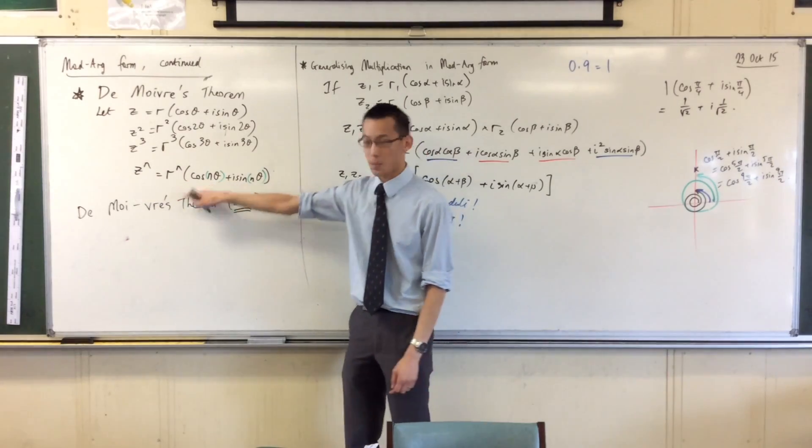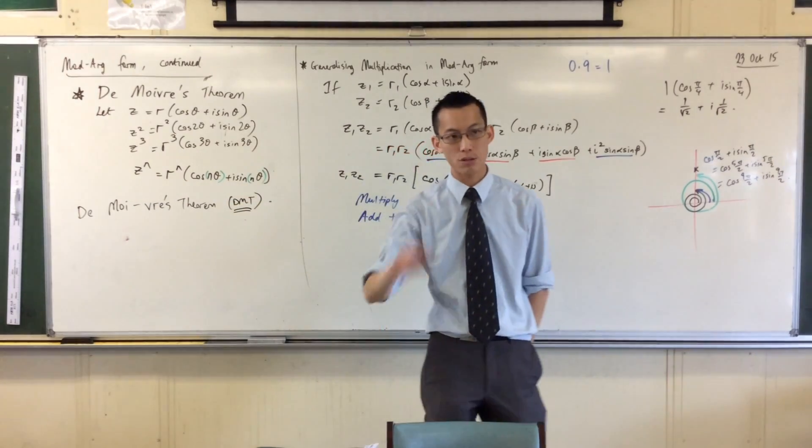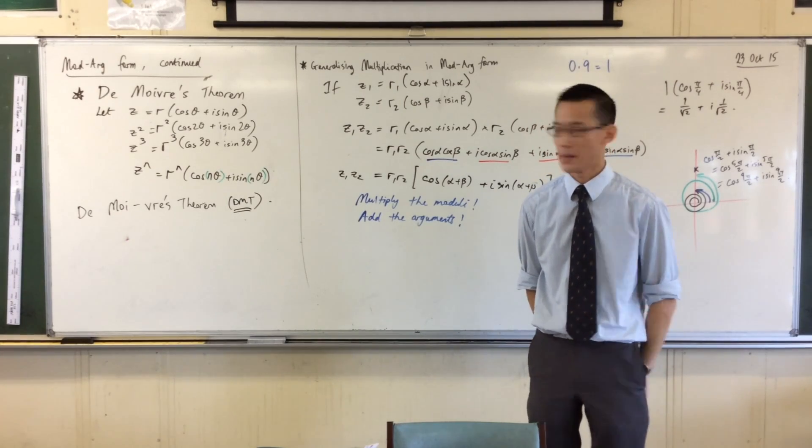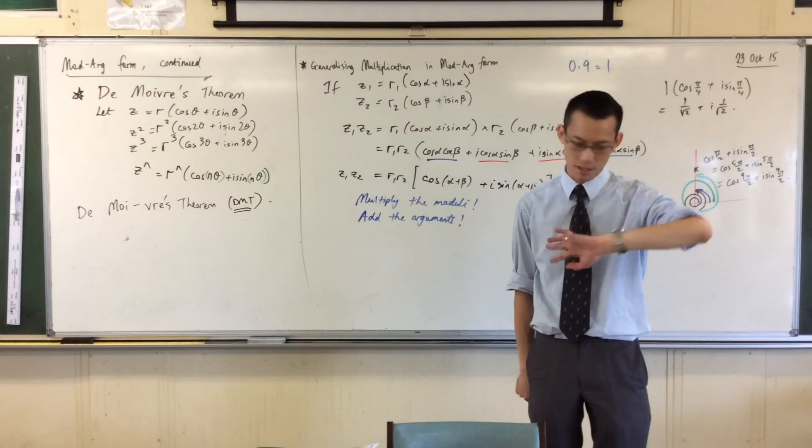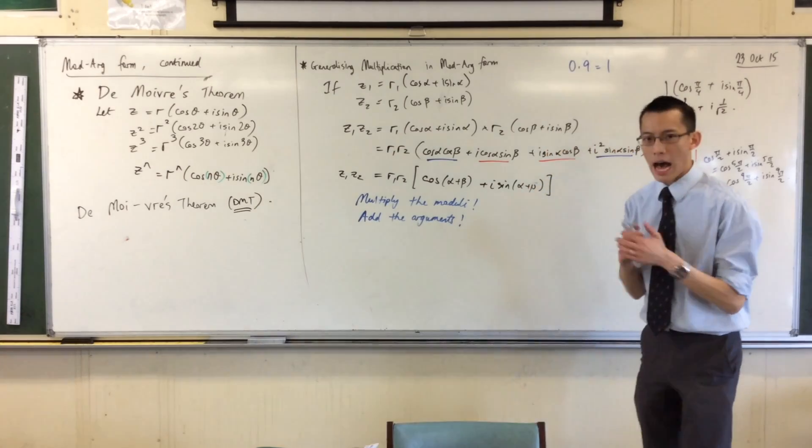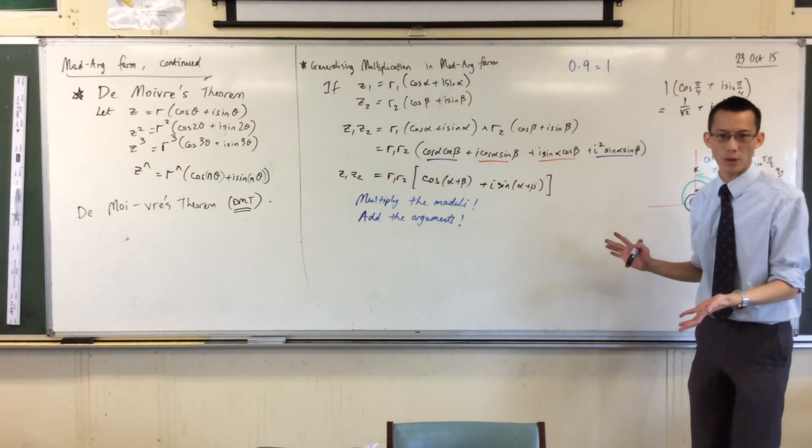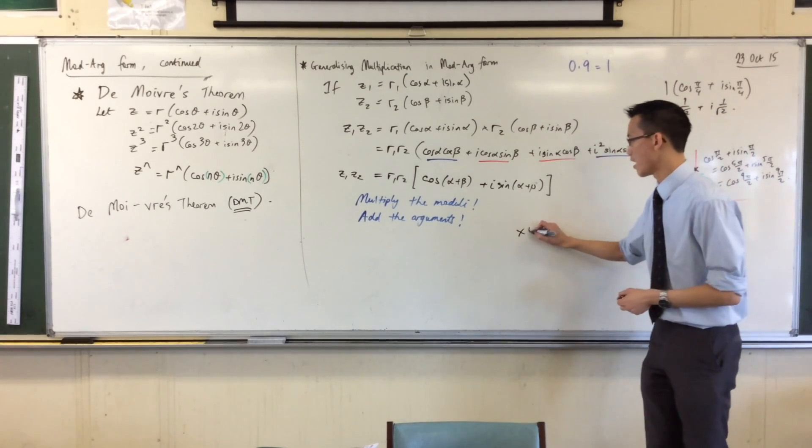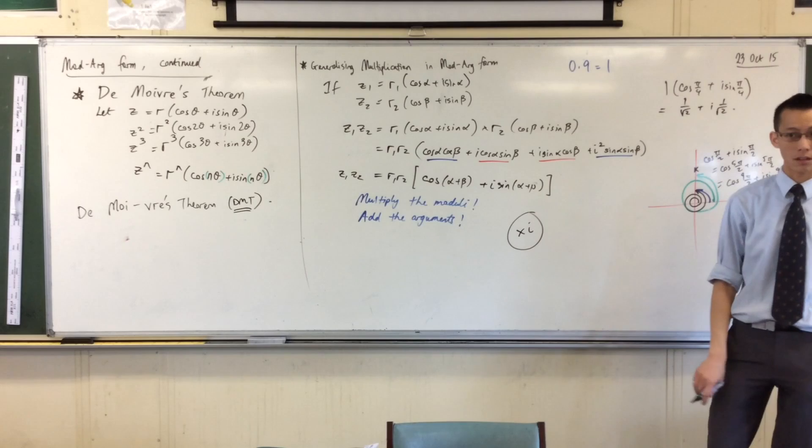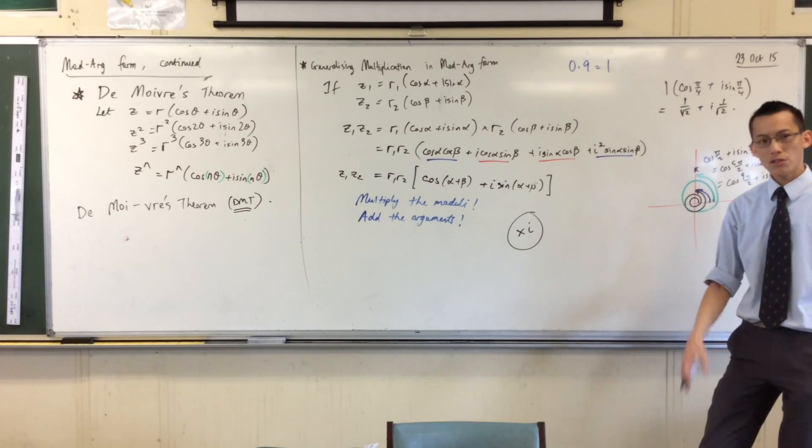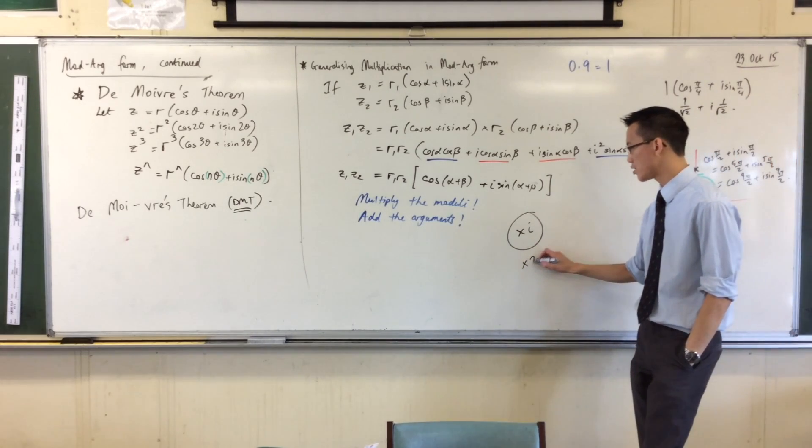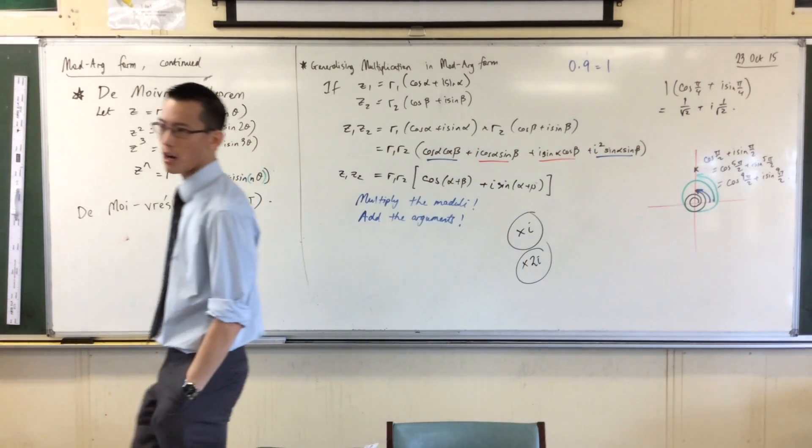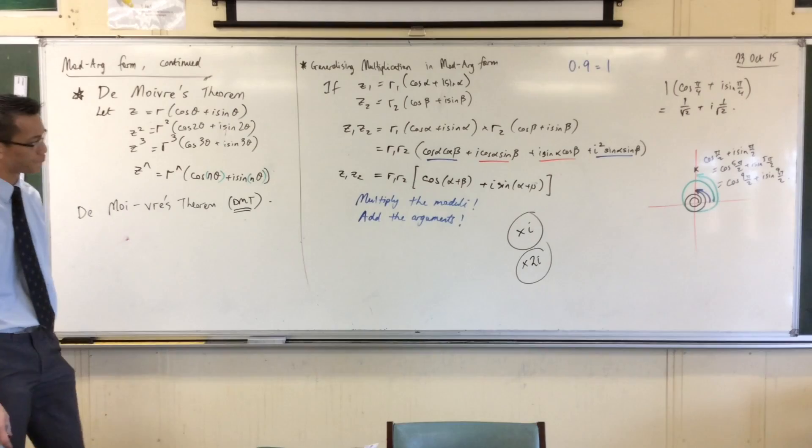De Moivre's theorem is a very special case. Because it's special, it does come up repeatedly. In fact, you'll see it appear in exercise 1.2. You can take quite significant advantage of it. Now, before I let you loose, I wonder, based on all this generalizing we have done, what you would make of repeated multiplication by something like 2i. Don't shout it out. Just try and picture what might be happening.